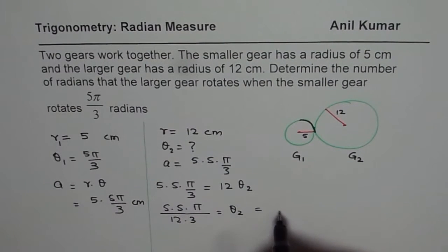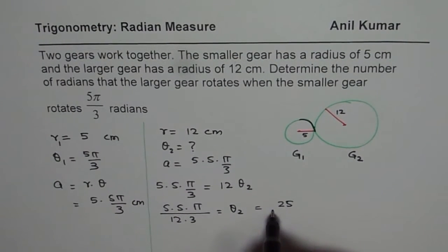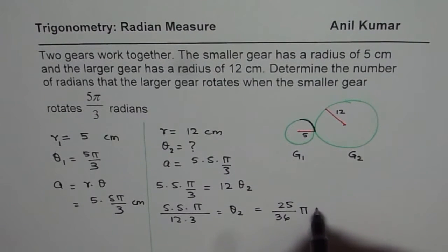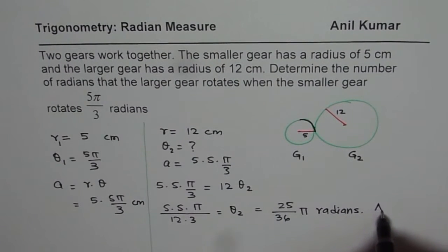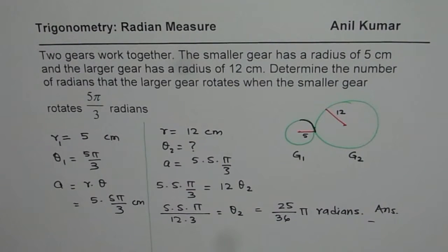So you can write this as 5 times 5 is 25 over 36π. So that will be our answer.